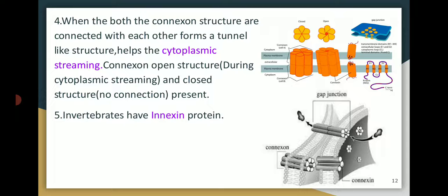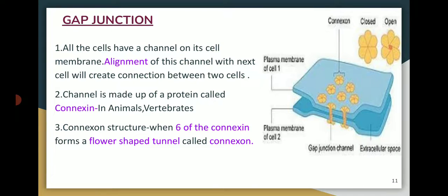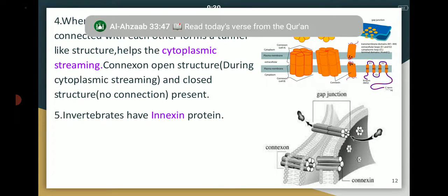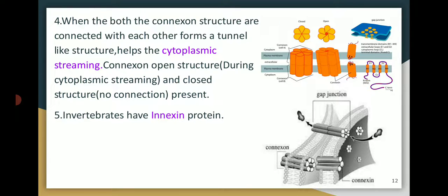When both connexon structures from adjacent cells connect with each other, they form a tunnel and cytoplasmic streaming occurs. The connexon open structure allows cytoplasmic streaming, while the closed structure has no connection. In the closed structure, no cytoplasmic connection is present; but when open, a hole forms and connection between the cytoplasm is established. In invertebrates, this connection is made up of innexin protein.